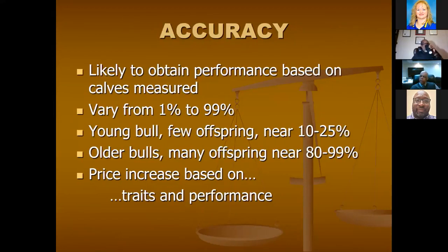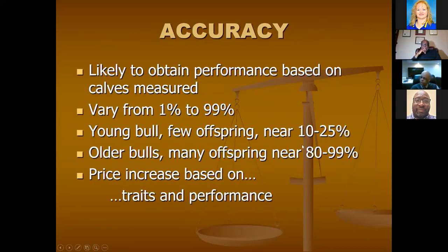Another thing to watch for is that some traits are correlated. When they're born little, they often grow slow; when born big, they grow fast. Also, animals that grow real fast don't always have the best fertility or make the most milk. What we want in a bull is one that's born little but grows as fast as the big bulls. At the sale we went to, there were 59 bulls and we only picked out 12 that fit these criteria. Accuracy is also important — it tells you how likely you are to get the predicted EPD performance. Accuracy is based on the number of calves that have been evaluated and ranges from 1 to 99%. A young bull may have only 10 to 25% accuracy — you're taking a guess. An older bull with many calves may be 80 to 99% accurate — you can bet your money on him, but he costs more.